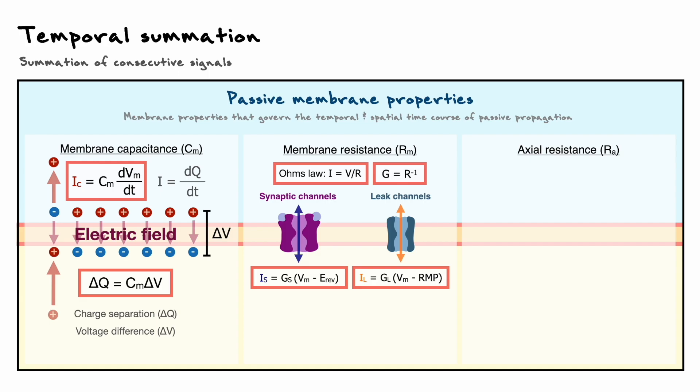Now, in terms of their roles, leak channels are the channels that are opened at rest and govern the resting membrane potential. Their summed resistance or conductance, depending on how you see it, is known as the leak resistance or RL. This value is also sometimes referred to as the input resistance.